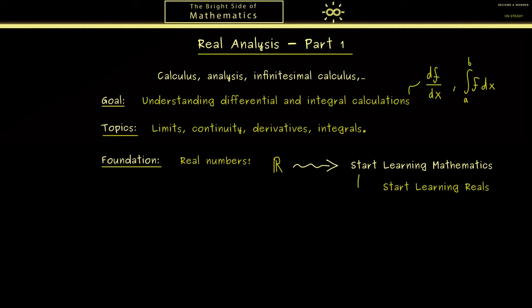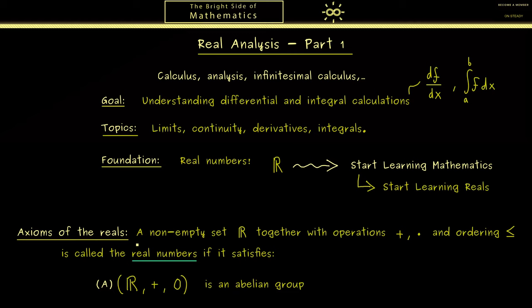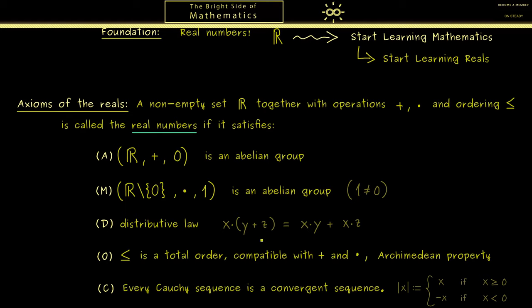For us here we will take the axioms of the real numbers as our foundation. Indeed they are not so complicated. We just have a set with two operations addition and multiplication, and also with an ordering such that we have all these properties here. Roughly they tell us that we have a field of numbers that are also nicely ordered, which simply means that we can visualize the real numbers as the number line.